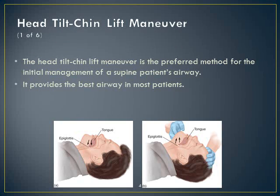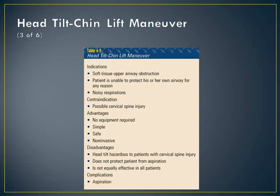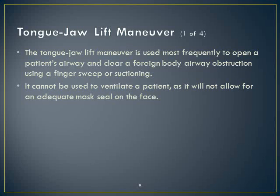The head tilt chin lift is the preferred method for a supine patient without spinal injuries, and it provides the best airway management. It works well because it extends and opens the airway, is easy to perform, elevates the hyoid bone off the pharynx, gets the airway in a more neutral position, and helps displace the tongue to keep the airway open. The technique is one hand underneath the jaw, the other on the top of the head, lifting up to open the airway.